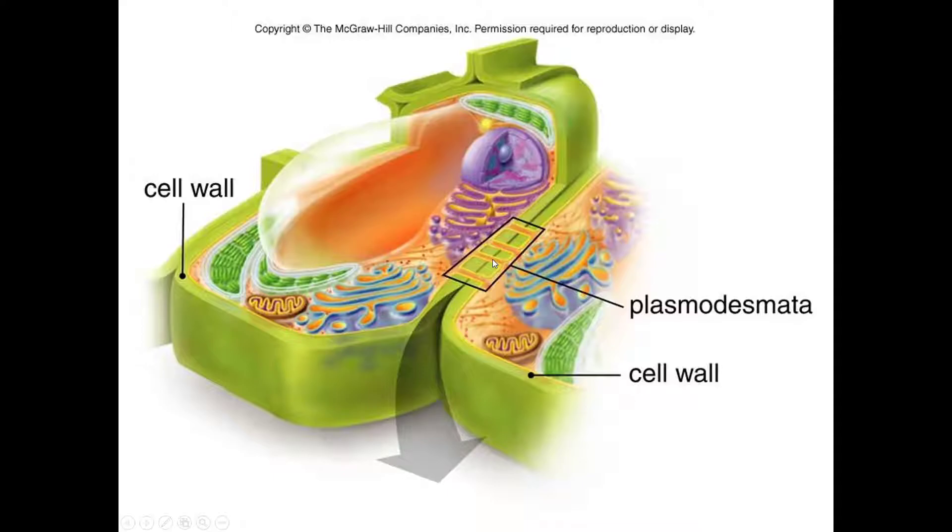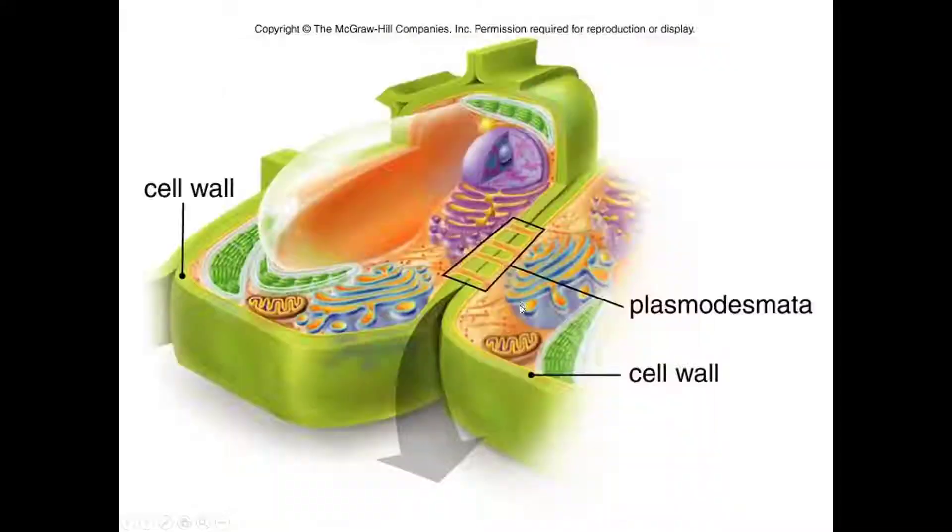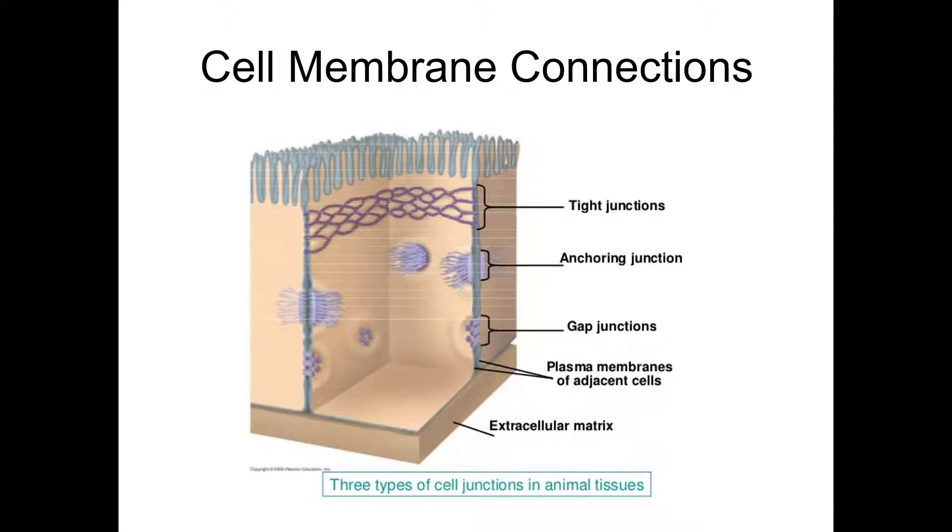Those are the plant junctions that are essentially used for sharing fluid and it's part of their vascular system. It's used in nectar secretion and all of that. So make sure you can define the difference between tight, anchoring, and gap. And the examples that I used in the lecture are ones that I use on the quiz, as well as the plasmodesmata. Those are all belonging to the same grouping of questions, meaning you only get one of that, but you've got to know all four of them because you don't know which question you're going to get from those four.